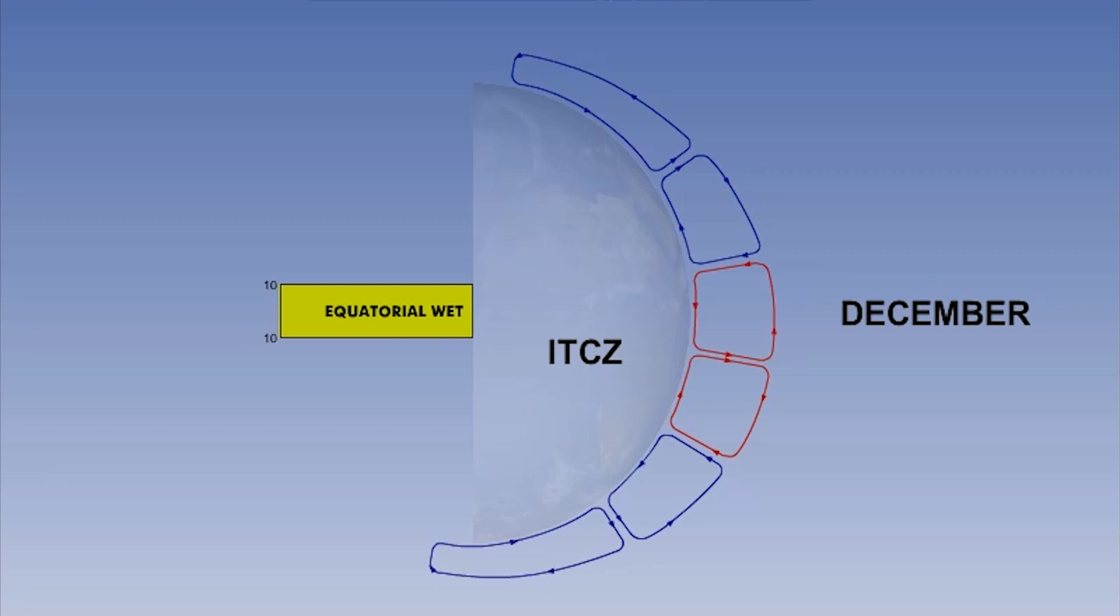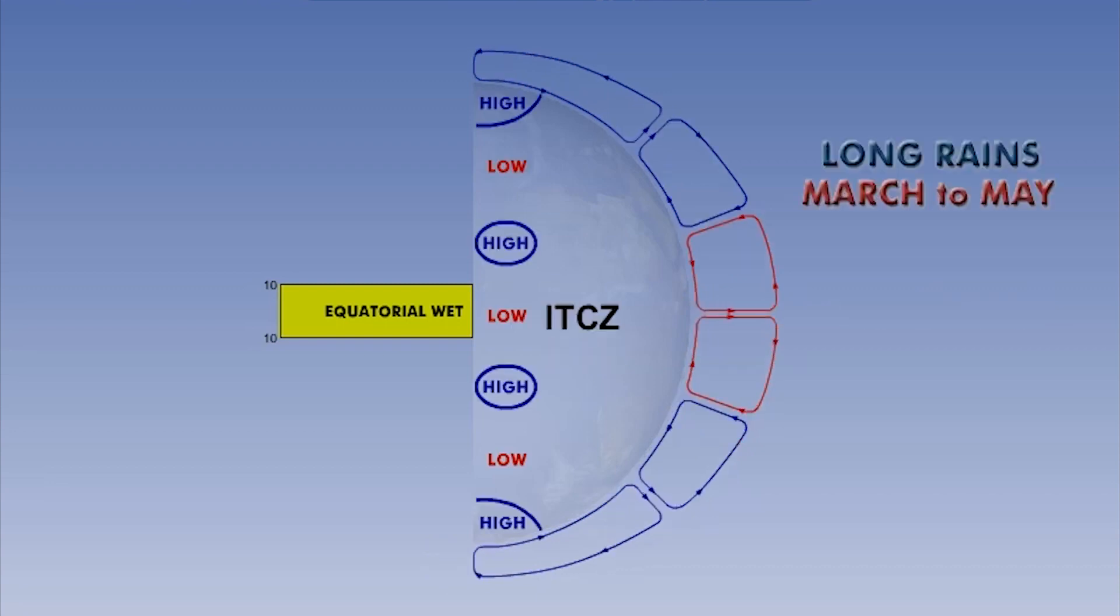As a result, there will be two main wet seasons. In equatorial East Africa, these rains occur from March to May and are called the long rains, and from November to December and are called the short rains.